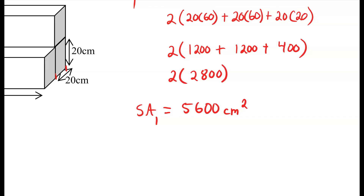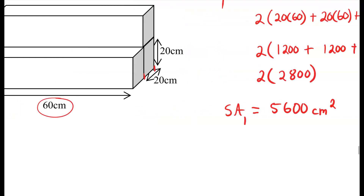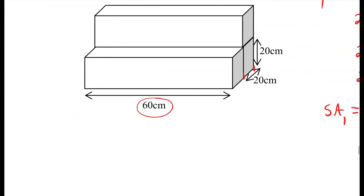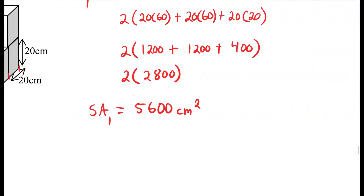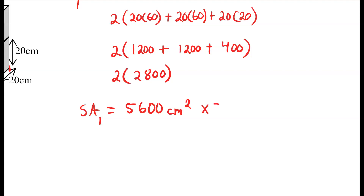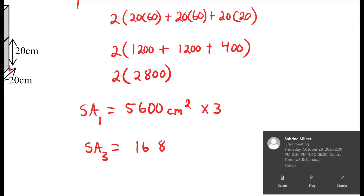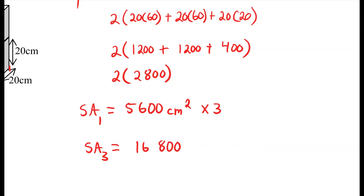This is for one of the rectangular prisms, and looking at the picture we have three rectangular prisms. So I'm going to multiply this by 3. The surface area of 3 prisms equals 5,600 multiplied by 3, which is 16,800 centimeters squared.